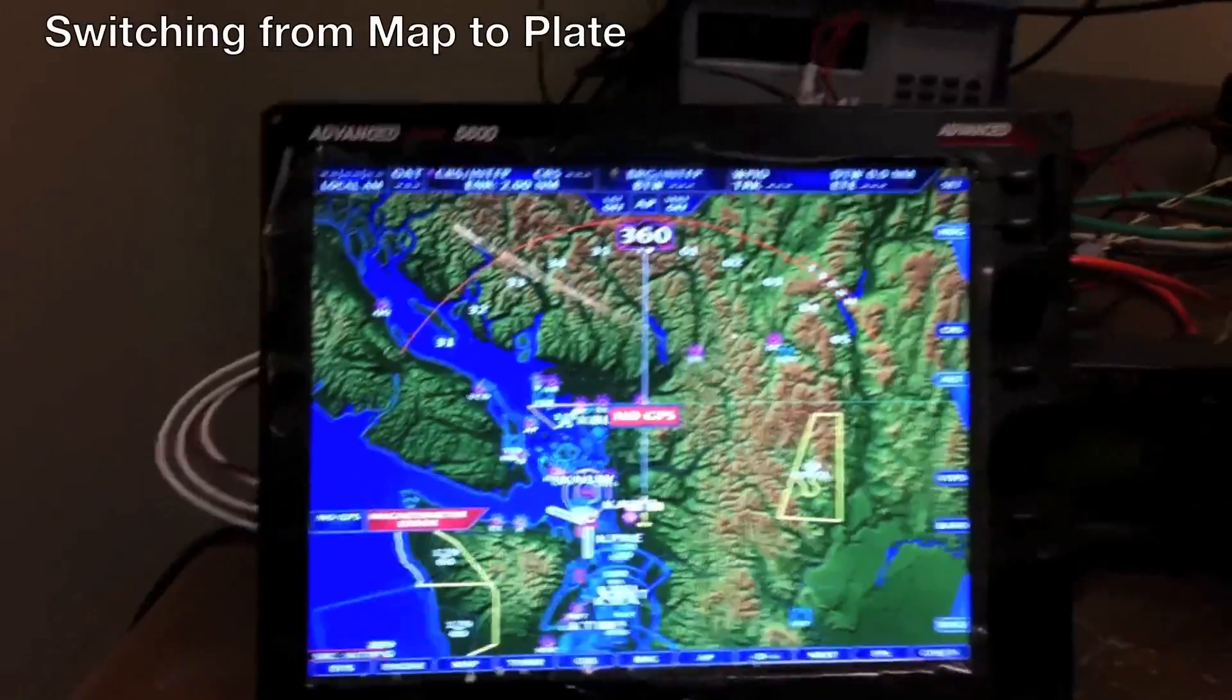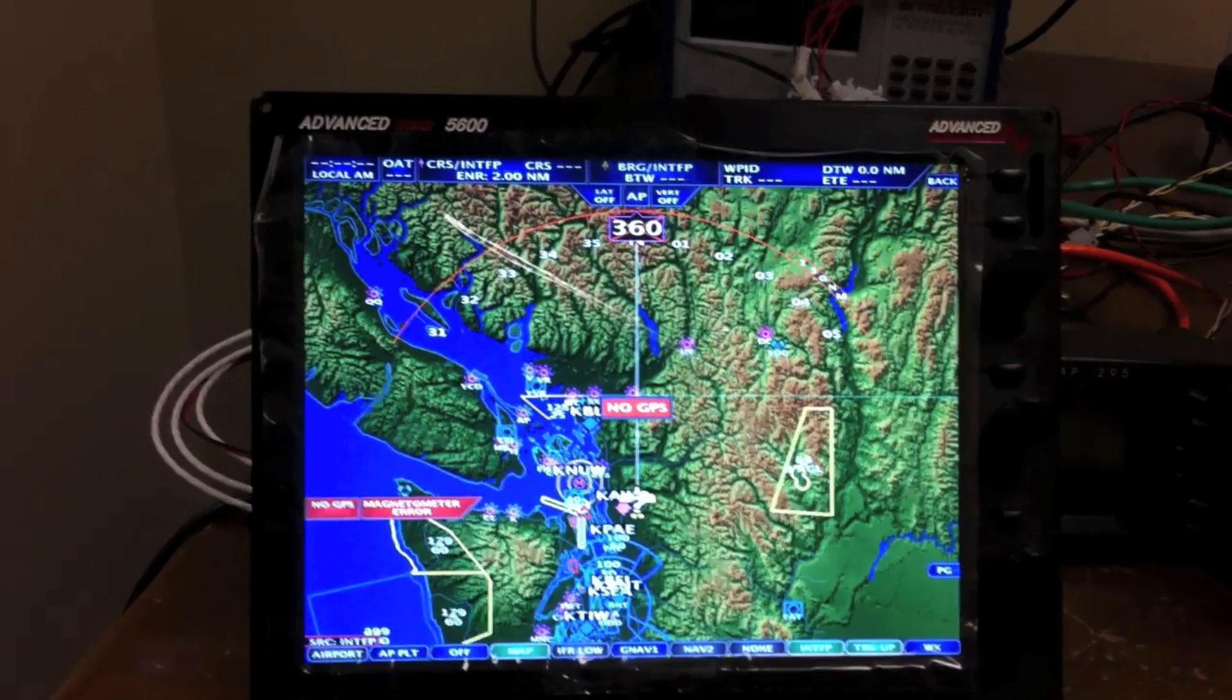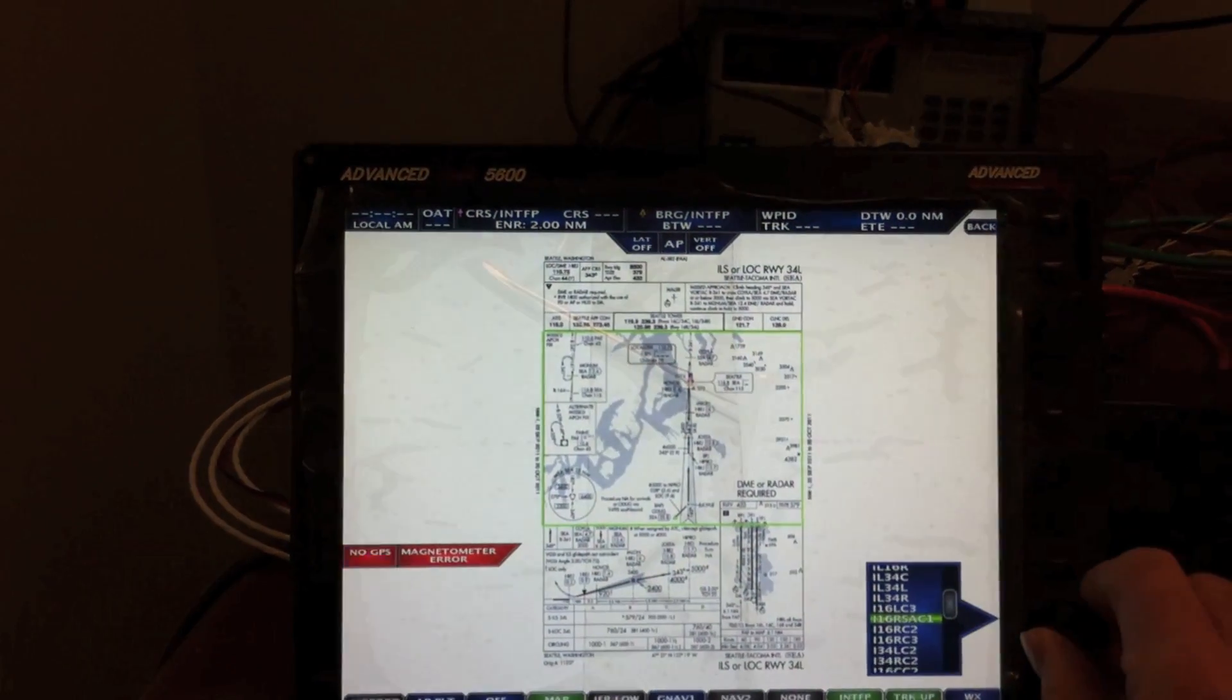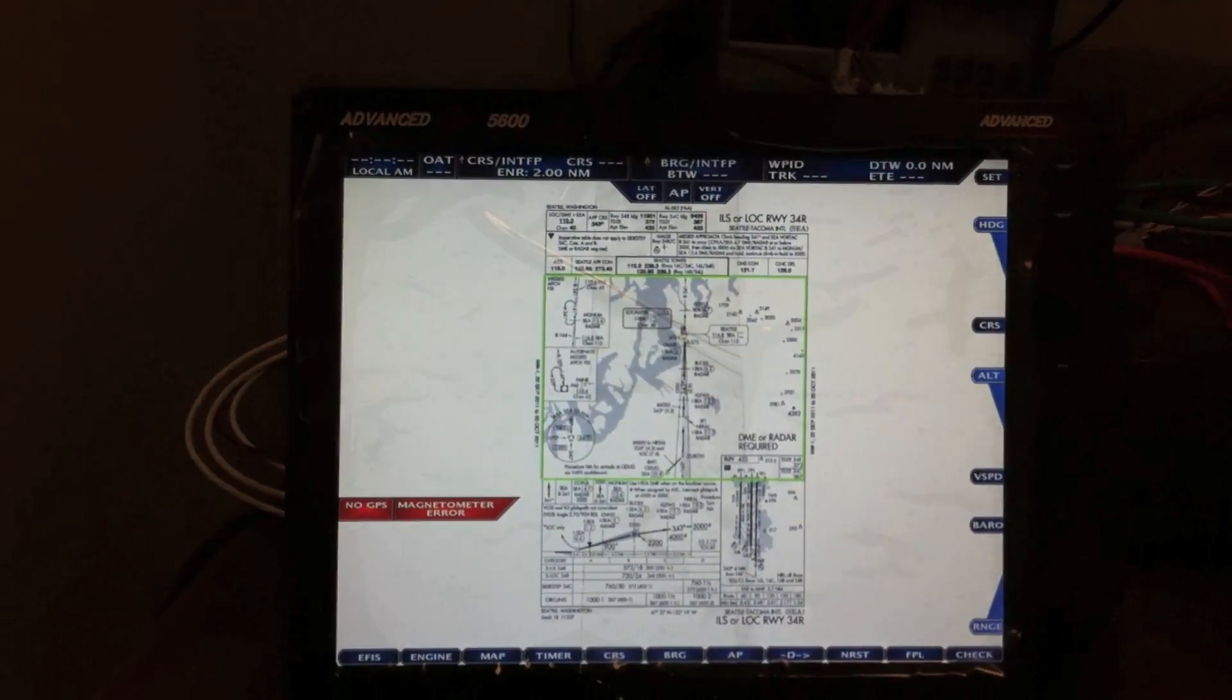Adjust between map and approach plate. So here's your map button. Press map. Approach plate. Select the plate you want. Hit enter. Now you've got the approach plate.